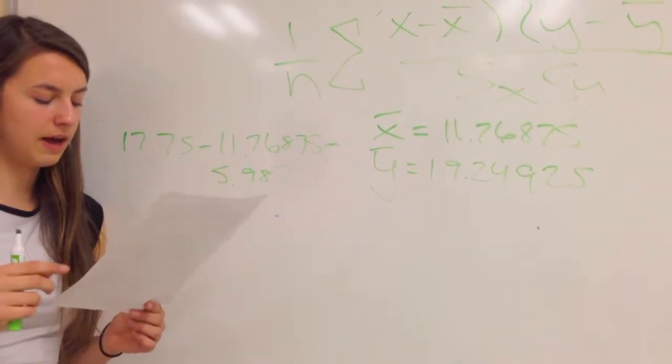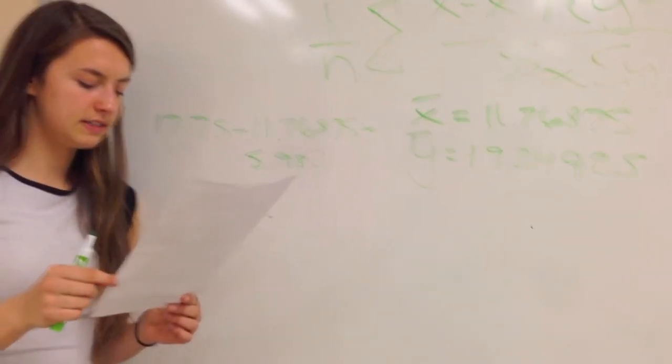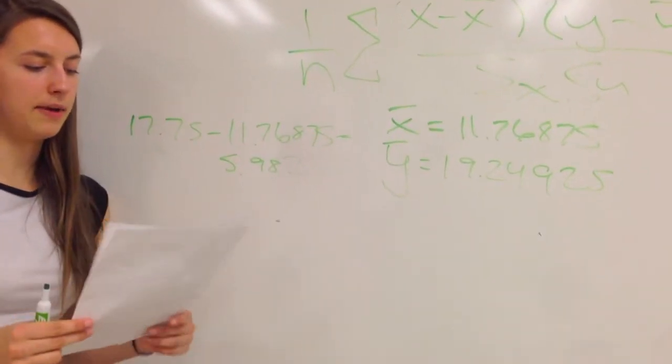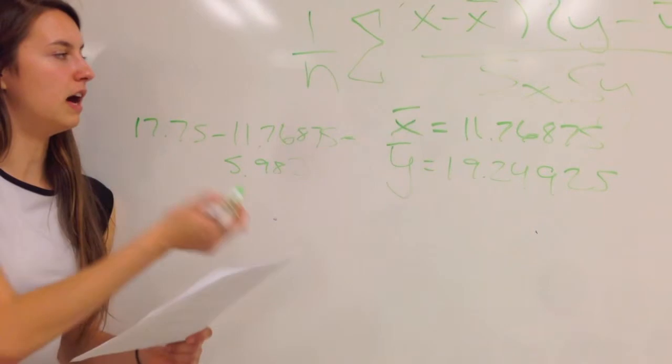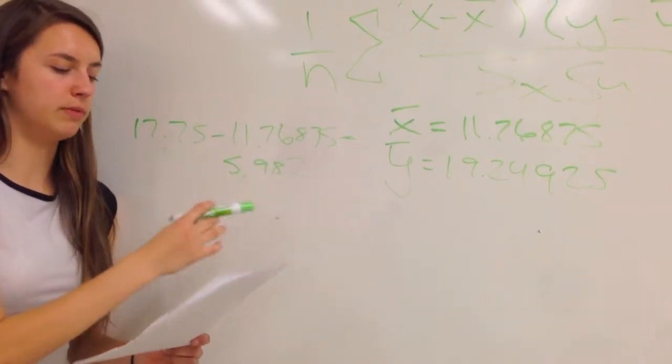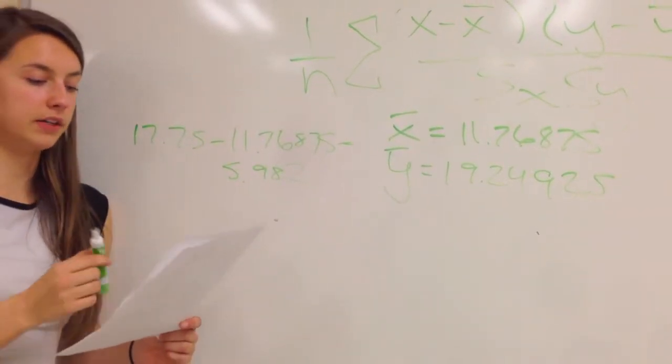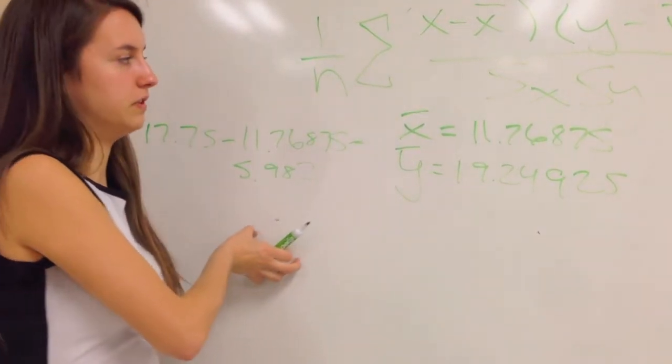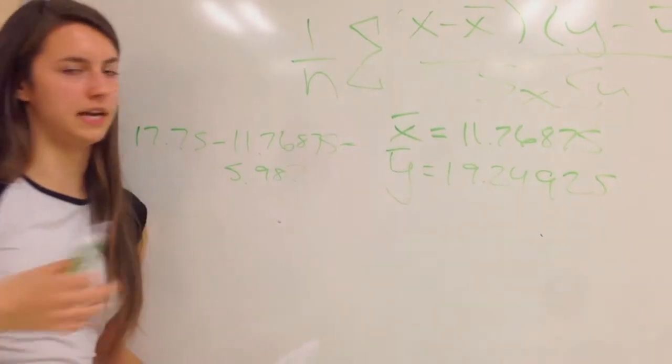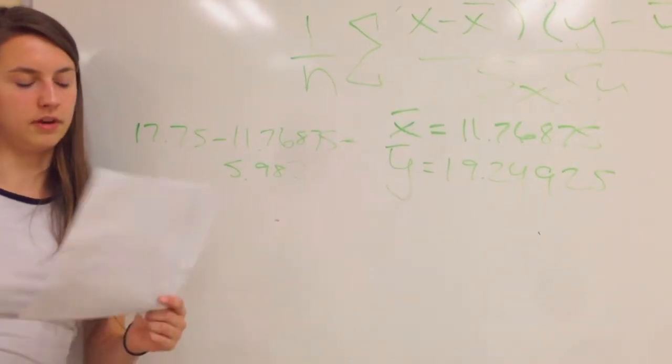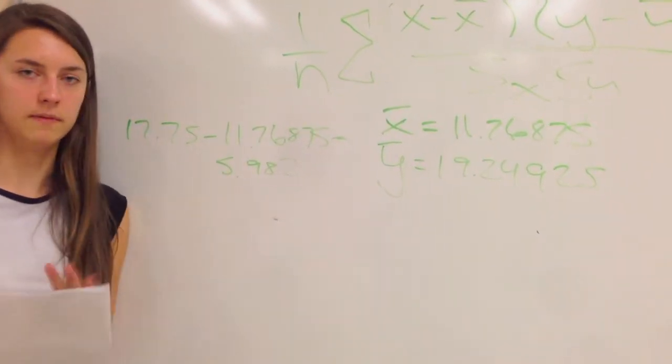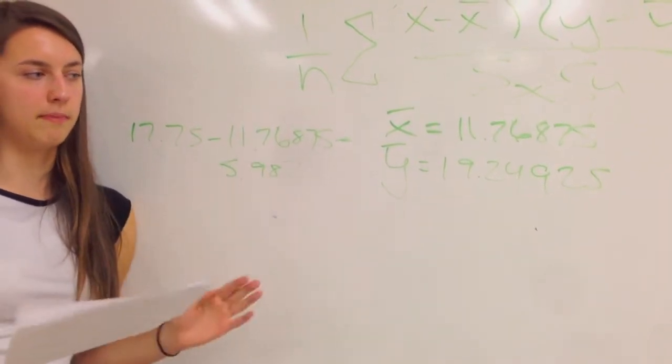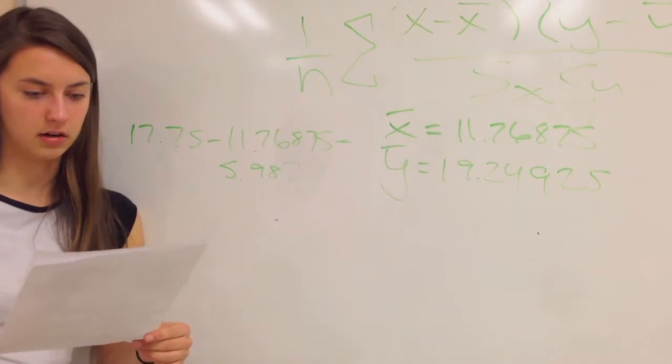So I do that for all of my x-data points, then do the same thing for all of my y-data points. And after I get a value for x, for example this one, I'm going to multiply it by the corresponding y-value. And this shows us how our, once we do it for all the points, shows us how all of our data points on the graph, if they're mostly negative or mostly positive, or all negative or positive. And that tells me which direction my data goes in.